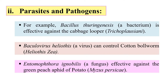We can use natural parasites and pathogens to eliminate or control the population of harmful insects — whether bacteria, virus, or fungus introduced into the crop, they will control the population of insects against which they are specific. Keep in mind they should only attack the target insect and be harmless to useful insects.